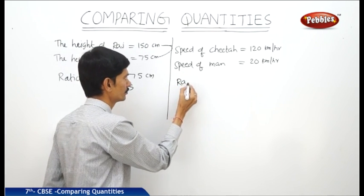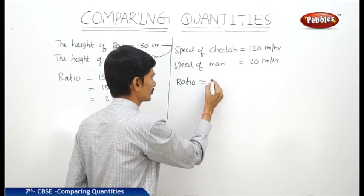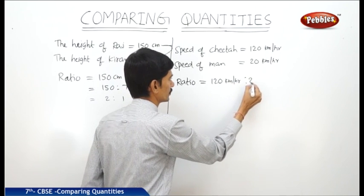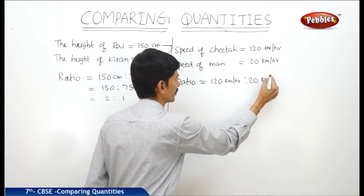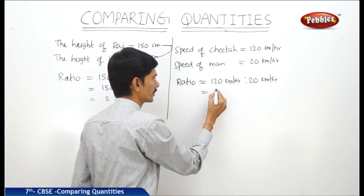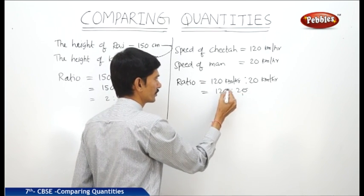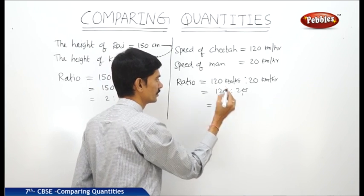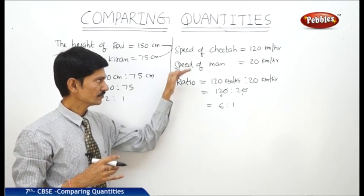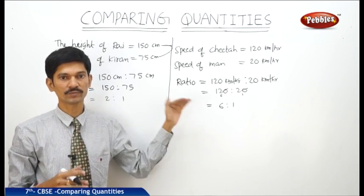We can compare these two speeds by ratio. Ratio equals 120 kilometers per hour is to 20 kilometers per hour. The kilometers per hour cancel out, giving us 120 is to 20. Since 20 ones are 20 and 20 sixes are 120, this equals 6 is to 1. Any two quantities can be compared, but while comparing using ratio, the two quantities must be of the same units.